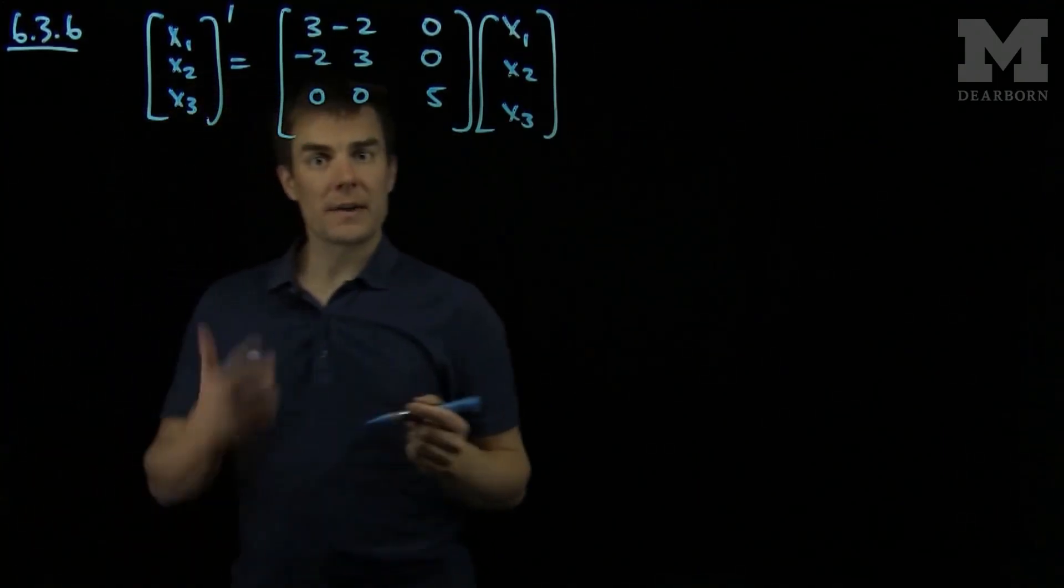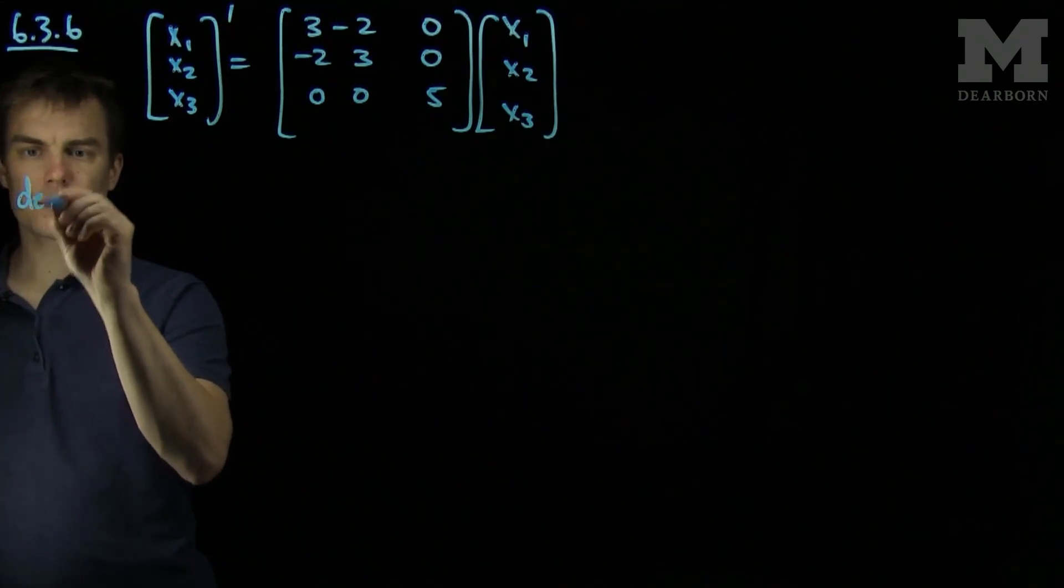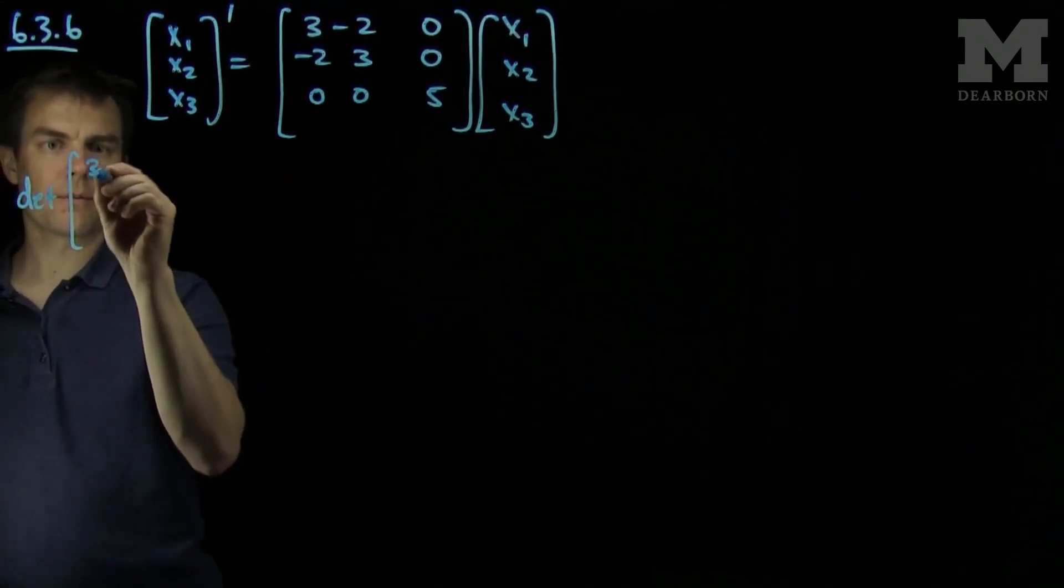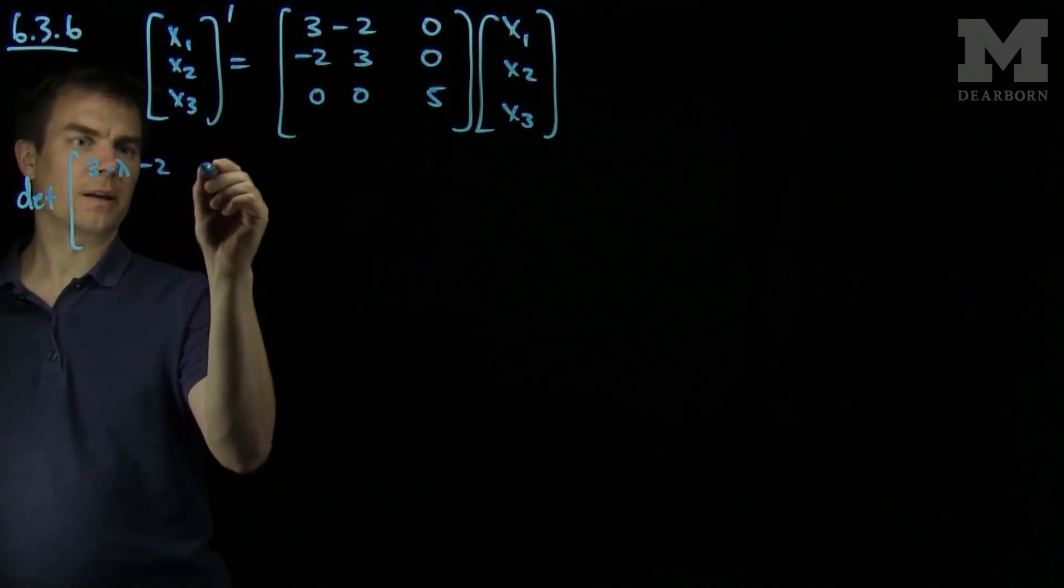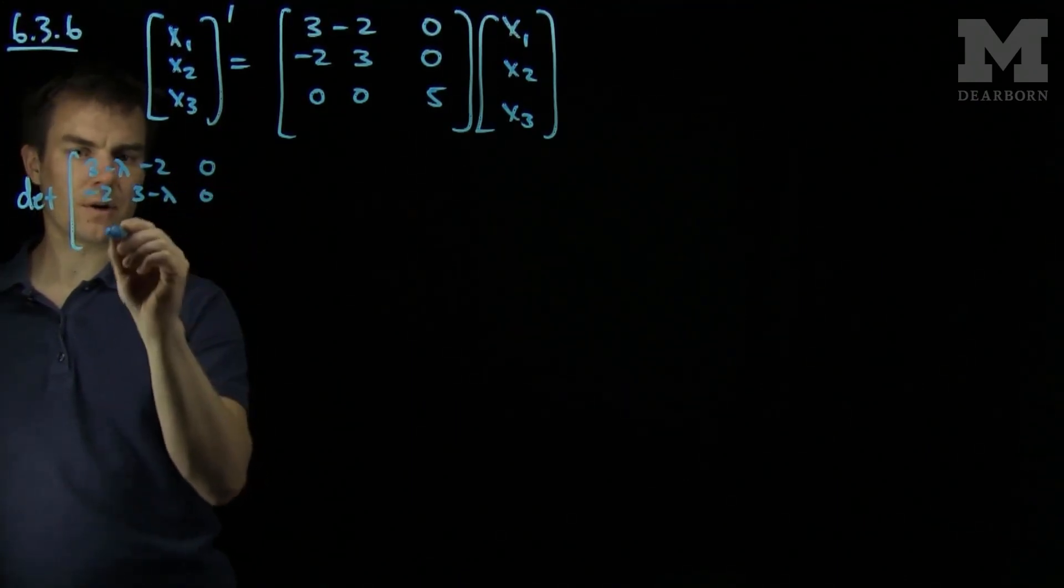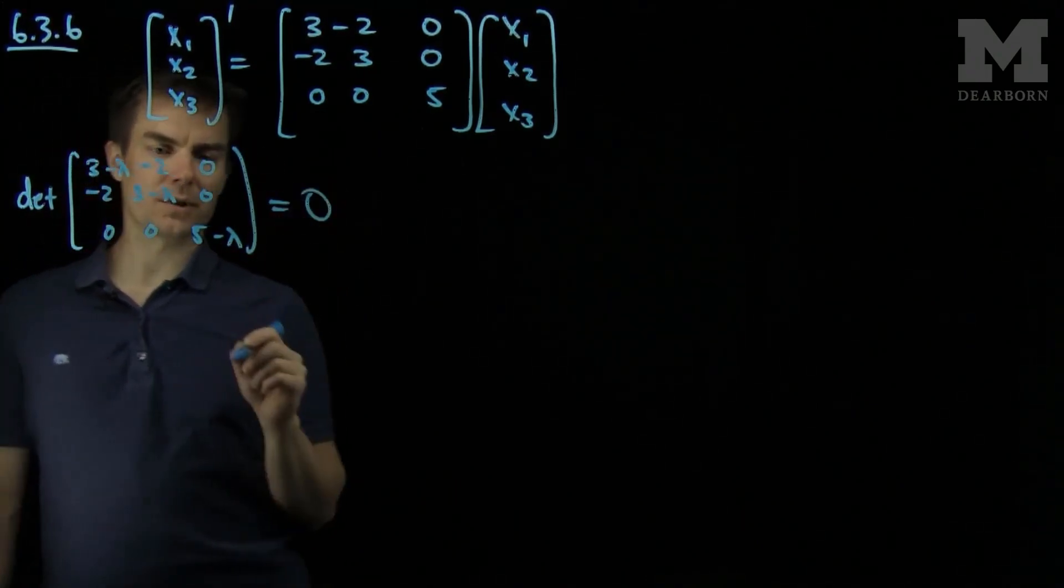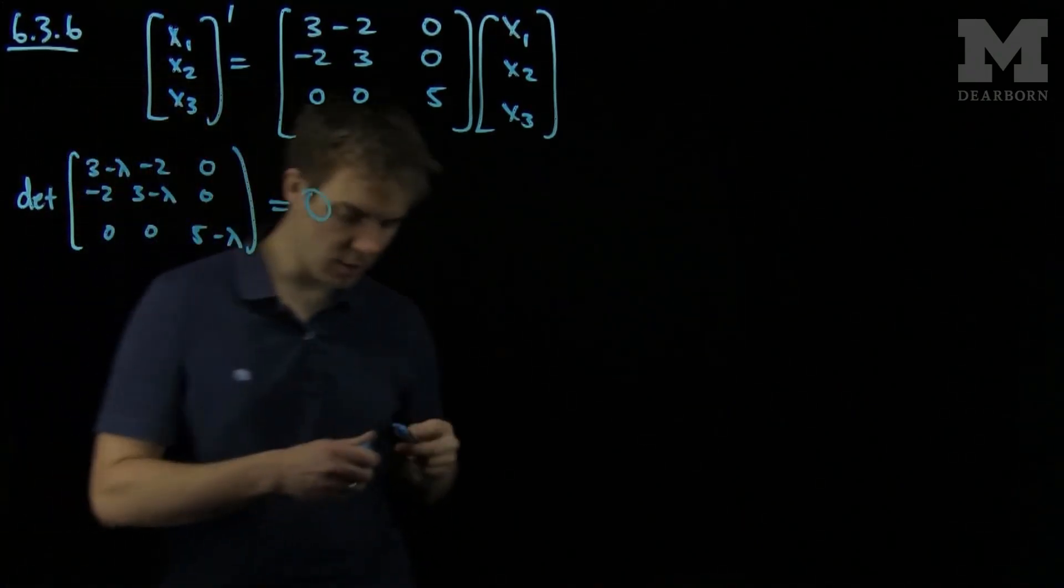To do this we'll find the eigenvalues and eigenvectors of this matrix. So to find the eigenvalues, we compute the determinant of [3-λ, -2, 0; -2, 3-λ, 0; 0, 0, 5-λ] equals 0. We will expand along the bottom row.